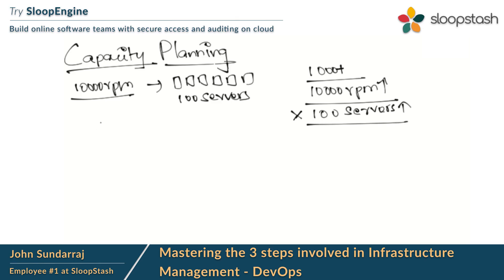What we need to do is properly derive the numbers. Numbers meaning the number of servers we need, how many CPUs we want, how much RAM we want, and how much storage we need. All these numbers we need to derive to do a proper capacity planning.